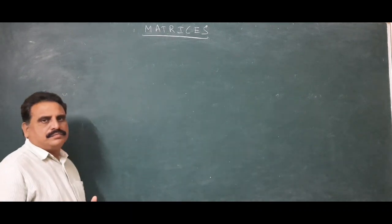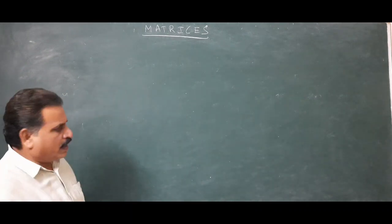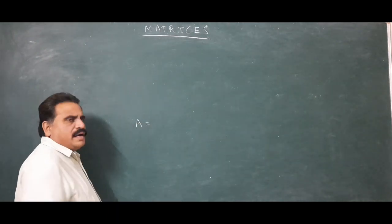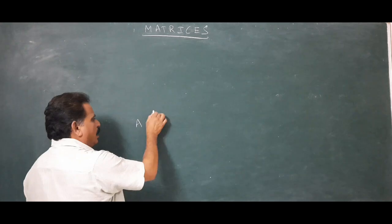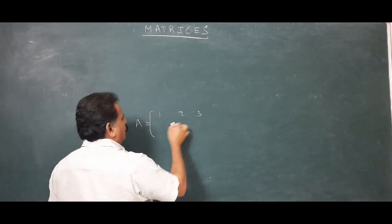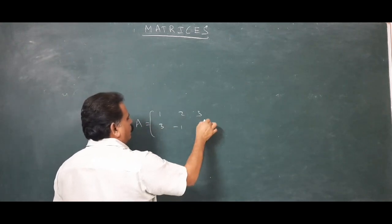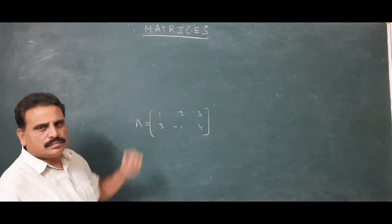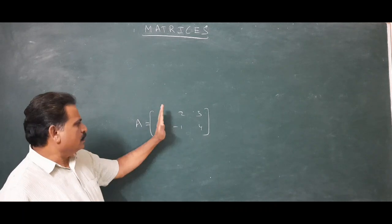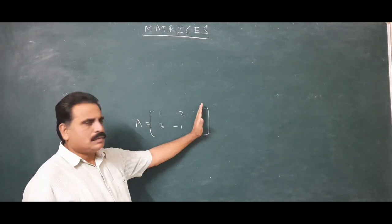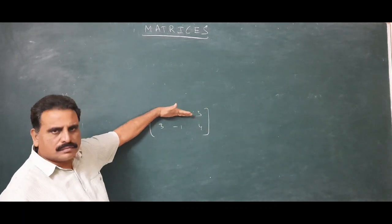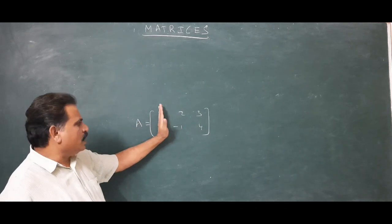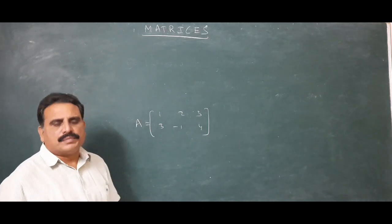Now let us take one matrix for example. Generally matrices are denoted by capital letters like A. For example, matrix A contains elements: 1, 2, 3 in the first row and 3, minus 1, 4 in the second row. It contains 2 rows and 3 columns. Horizontal lines are called rows and vertical lines are called columns.